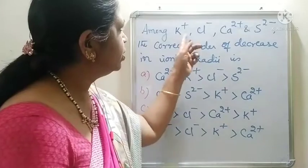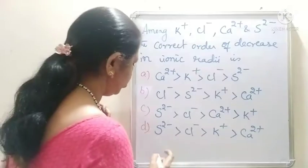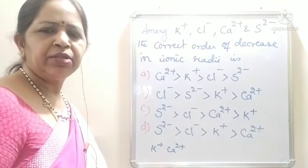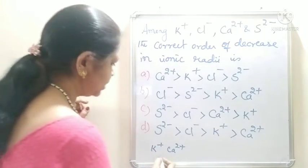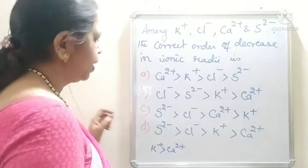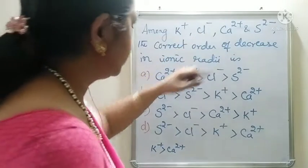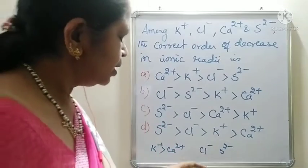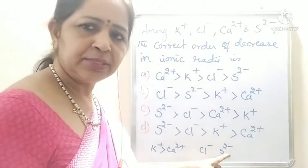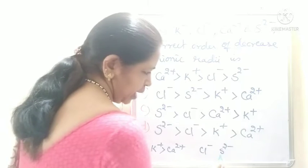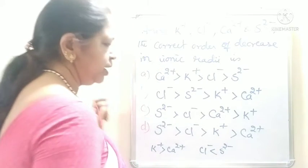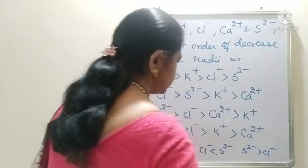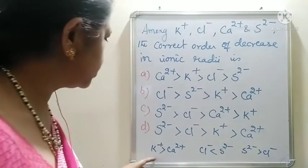Among the cations — K⁺ and Ca²⁺ — the ion with maximum positive charge is smaller. So K⁺ is bigger than Ca²⁺. Among the anions — Cl⁻ and S²⁻ — the ion with higher negative charge is bigger. So Cl⁻ is less than S²⁻, meaning S²⁻ is bigger than Cl⁻. This gives us the decreasing order within cations and within anions separately.